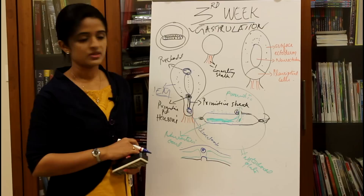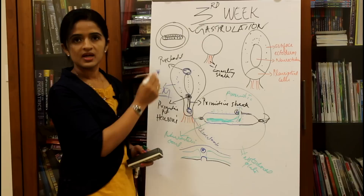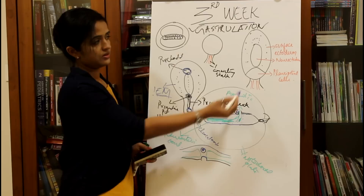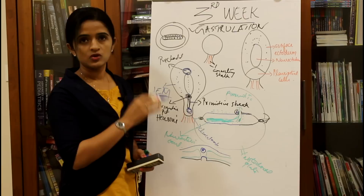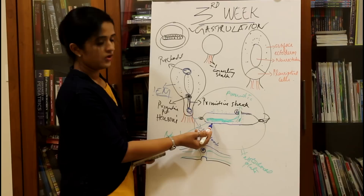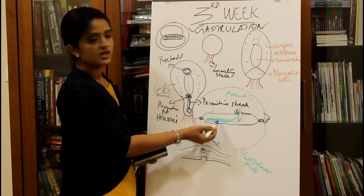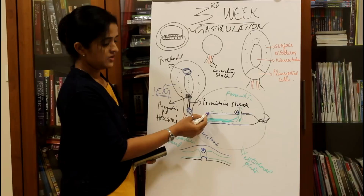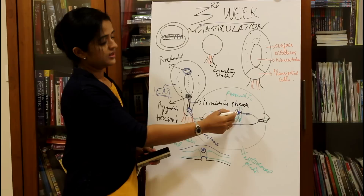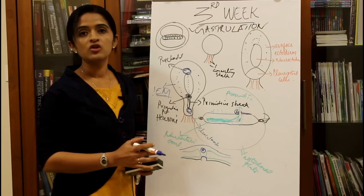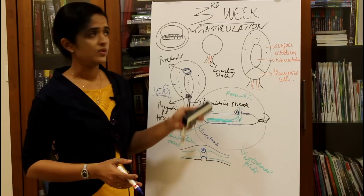After the formation of notochord and intraembryonic mesoderm, the surface epiblast cells are replaced by the primitive streak again. The primitive ectoderm is now considered the definitive ectoderm. The primitive endoderm has become the definitive endoderm, and with the formation of intraembryonic mesoderm, the primitive streak is the group of cells giving rise to all three germ layers. These are the embryoblast changes during the third week.